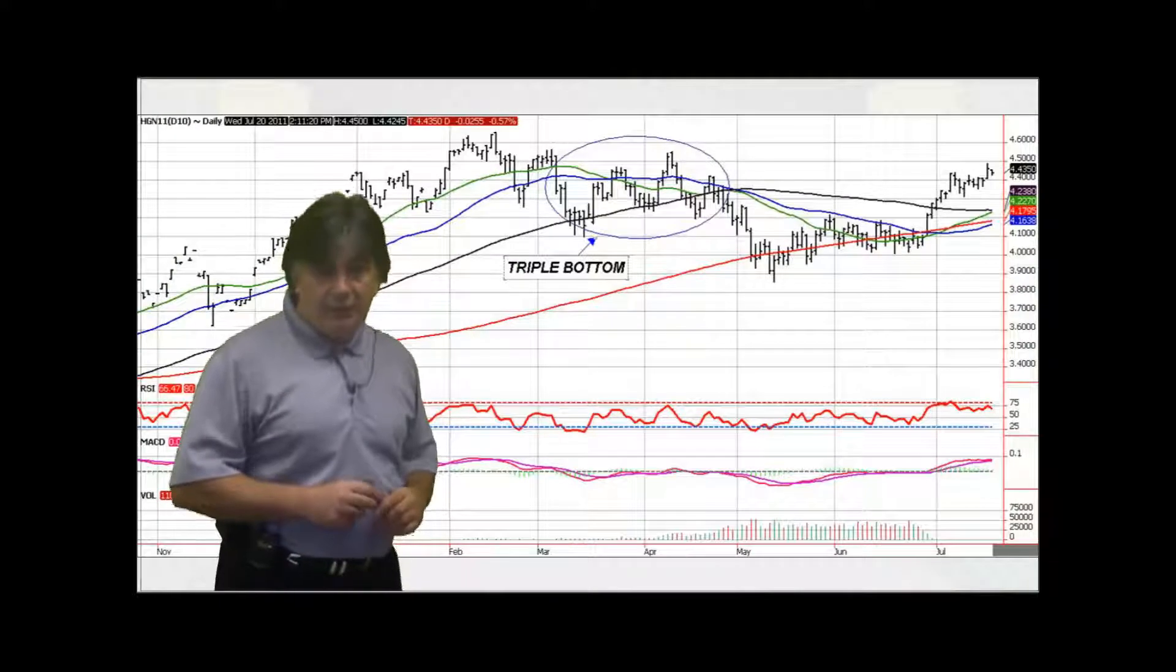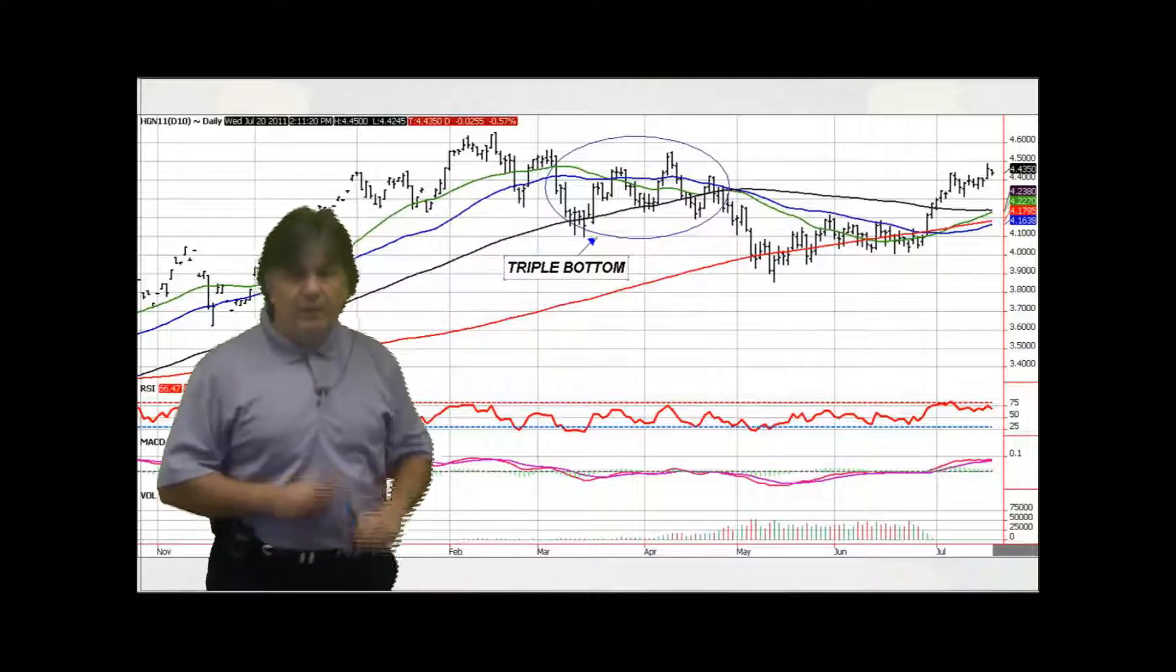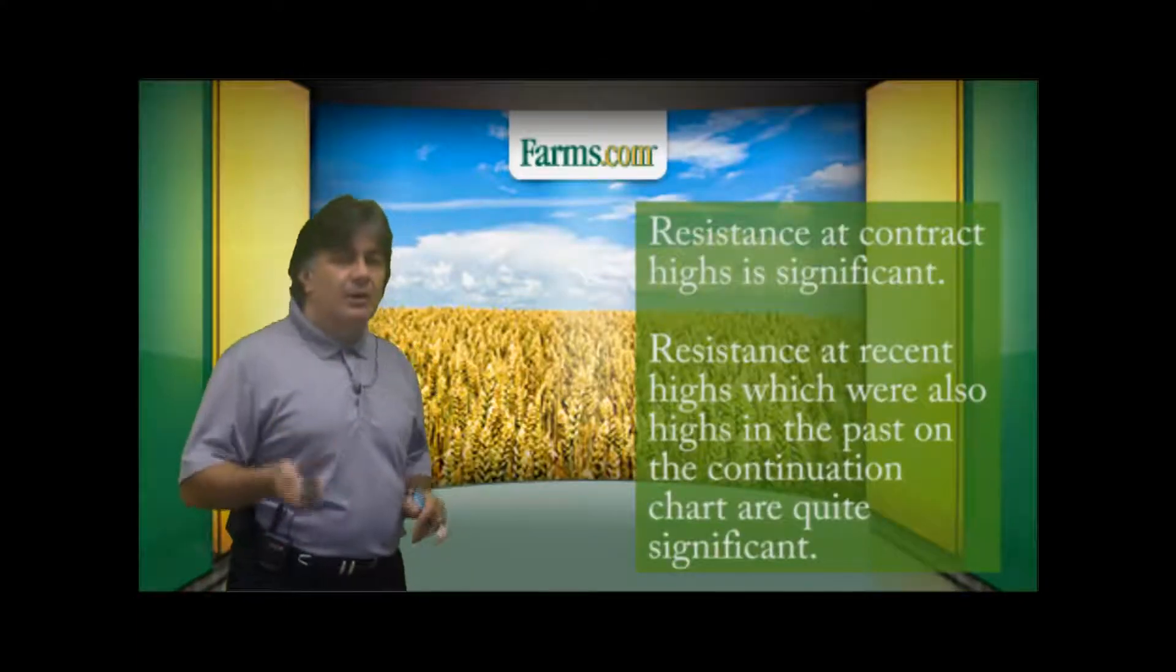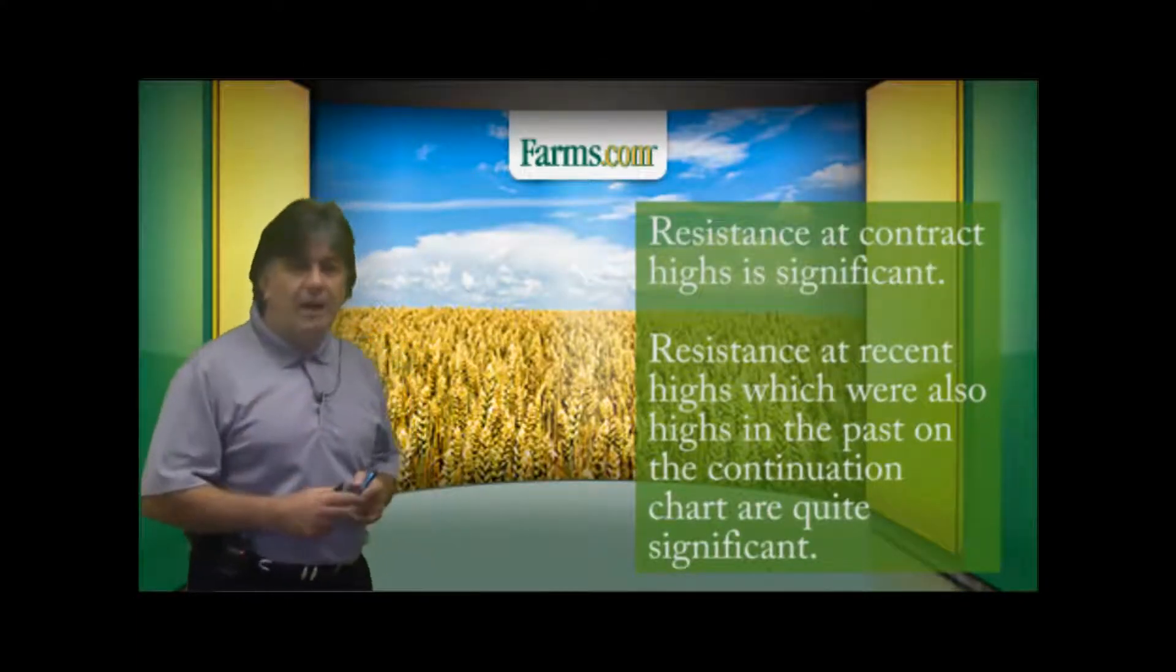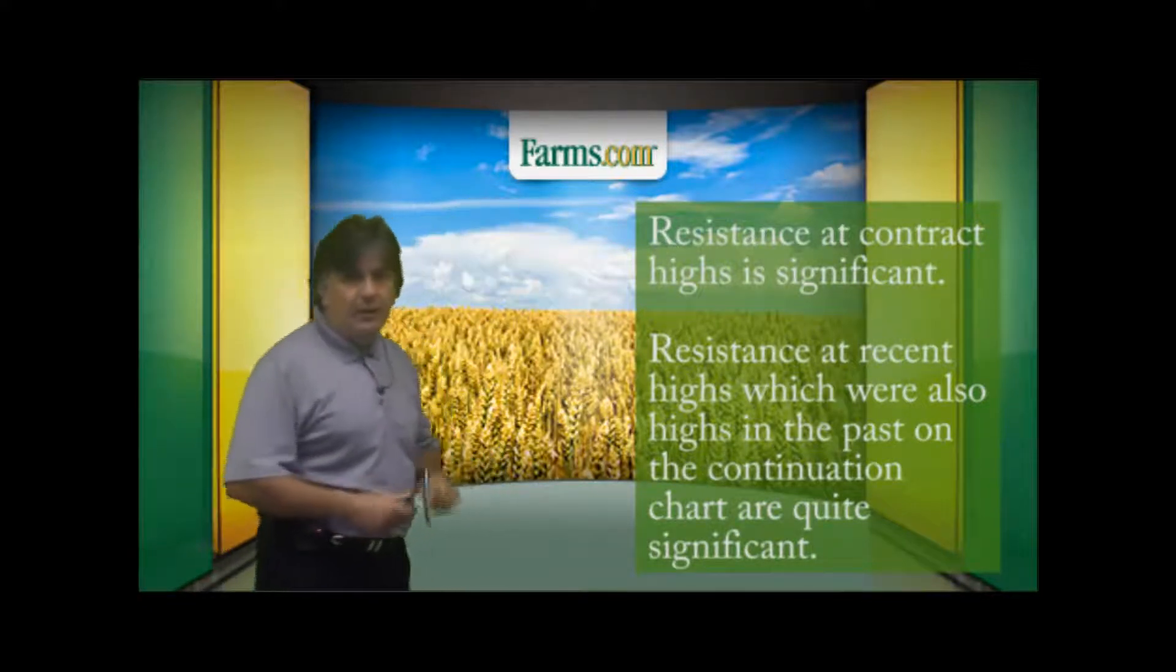Then there's triple bottoms as well. As you can see in this chart, the triple bottom, you draw the support plane. More significant than the single or double, triple bottoms are rare as well. This is the July copper daily futures chart. And you can kind of see that triple bottom on the chart there.